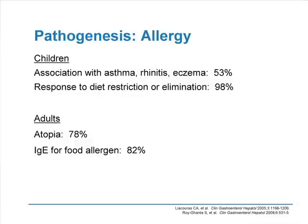The pathogenesis is probably an allergic component, and an immune-mediated mechanism is now part of the definition. In children, it is often associated with asthma, rhinitis, and eczema in more than 50% of patients. Diet restriction or elimination in children seems to be extremely effective — to the tune of 98%. In adults, the connection is less impressive: atopy is found in 78%, but since hay fever is so frequent, it's hard to connect it with EOE. On the other hand, there is an IgE for food allergen in 82% of patients, so the connection with allergy seems quite strong.